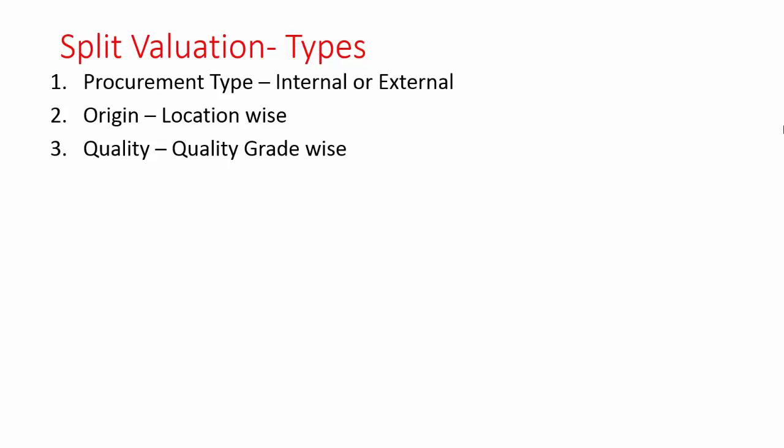I have explained you all these three things in the last slide. The procurement type — it can be internal or external. Then origin — it is the locations. And quality is the quality grade.